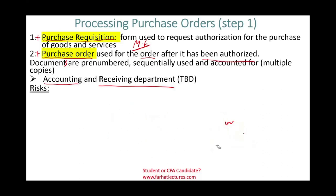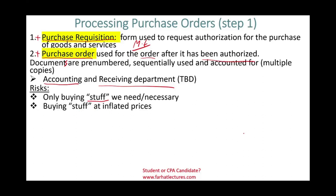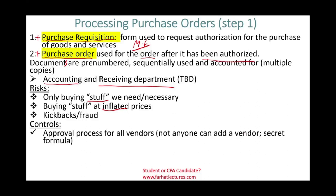What are the risks in this step from an operating perspective? We only need to be buying goods that are necessary for the company — the risk is you could be buying stuff you don't really need, or buying at inflated prices through kickbacks or fraud, like buying from friends, relatives, or a spouse. Controls include an approval process for all vendors — you cannot just select any vendor. Before a vendor is entered into the system, it has to be approved, and not anyone can add a vendor. Vendors' account numbers could also have a secret formula built in.